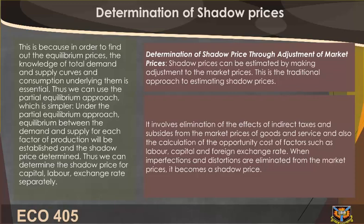Thus we can use the partial equilibrium approach, which is simpler. Under the partial equilibrium approach, equilibrium between demand and supply for each factor of production is established and the shadow price determined. This allows us to determine the shadow price for capital, labor, and exchange rate separately.